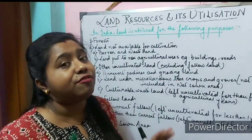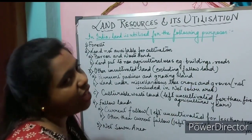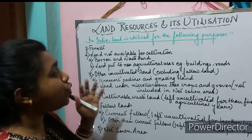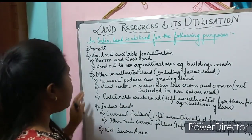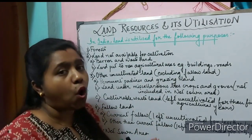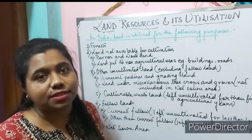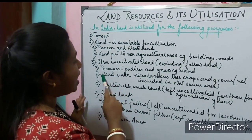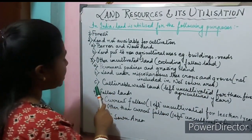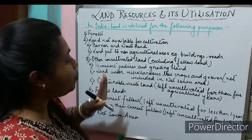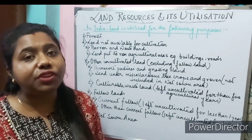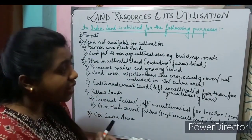Number three: other uncultivated land - that means land which is not used for cultivation for more than 5 years, excluding fallow land. Under this: (A) permanent pasture and grazing land - land used for grazing of livestock. (B) Land under miscellaneous tree crops and groves - these are lands not included in orchards, that means bamboo bushes or thatching grasses. (C) Cultural wasteland - a piece of land which was utilized in the past but abandoned for certain reasons, uncultivated for more than 5 agricultural years.